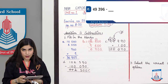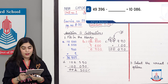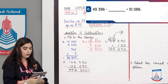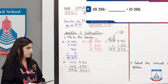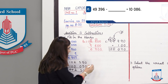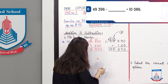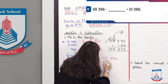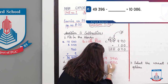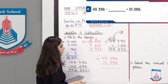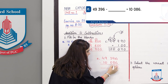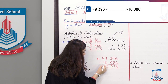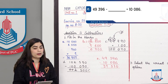Part E: 49,396 minus blank equals 10,086. Again, as in Part B, we have two values and must find their difference. We write the bigger number on top: 49,396 minus 10,086. Solving: 6 minus 6 is 0, 9 minus 8 is 1, 3 minus 0 is 3, 9 minus 0 is 9, 4 minus 1 is 3. The answer is 39,310.